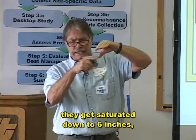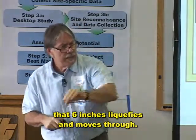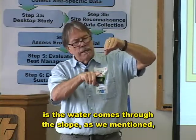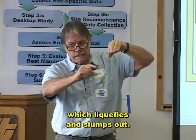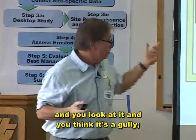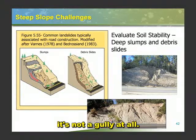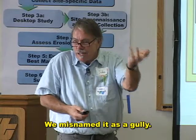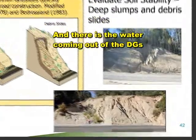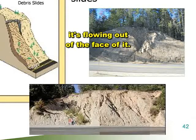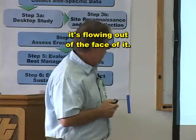They get saturated down to six inches; that six inches liquefies and moves through. A lot of times what happens on these DGs is the water comes through the slope, saturates a zone which liquefies and slumps out. Then that oversteepens the area above it and the slump marches up — and you look at it and think it's a gully, but it's not a gully at all. It's caused by seepage, a shallow geotechnical failure. We can't treat it like erosion — we misnamed it as a gully.